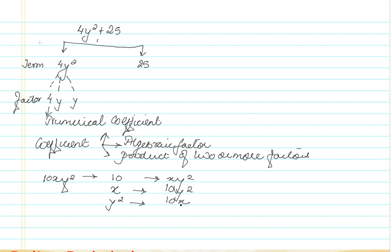Let me take one more example to help you understand coefficients. Here, 5 is the coefficient for x squared y; 5 is also the numerical coefficient. x squared is a coefficient for 5y, and y is a coefficient for 5x squared.